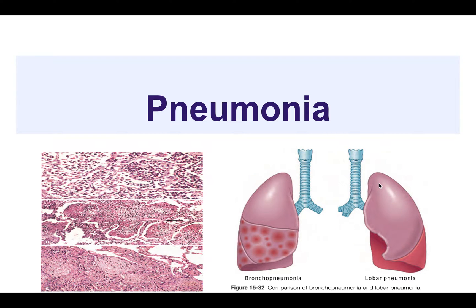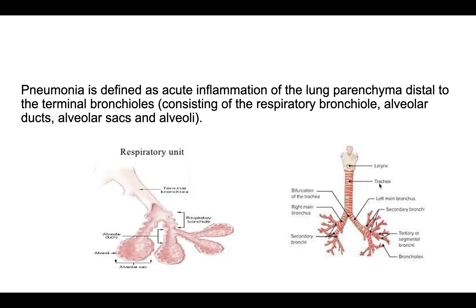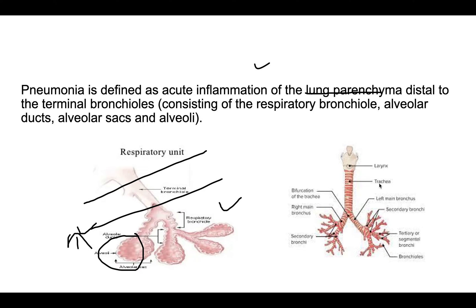In this video we will discuss about pneumonia. Pneumonia is the acute inflammation of the lung parenchyma distal to the terminal bronchiole. After the terminal bronchiole, you have the respiratory bronchiole, the alveolar ducts, and the alveolar sac. So the acute inflammation of this area distal to the terminal bronchiole is known as pneumonia.